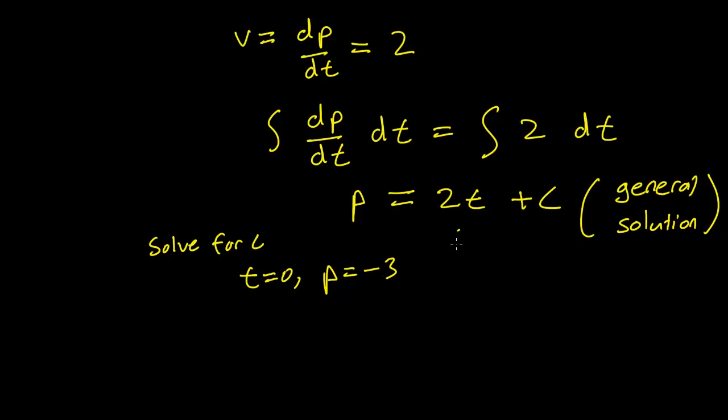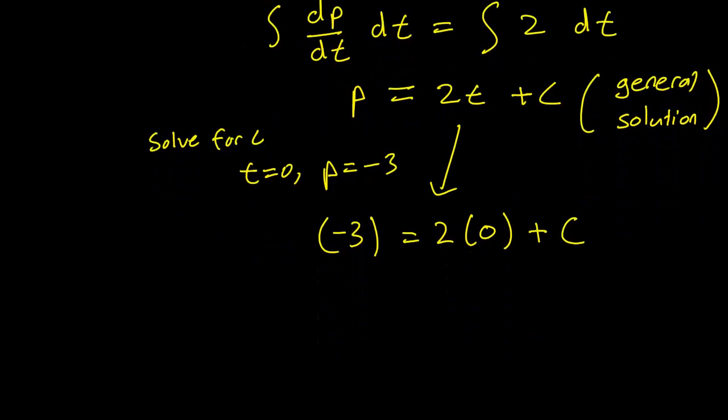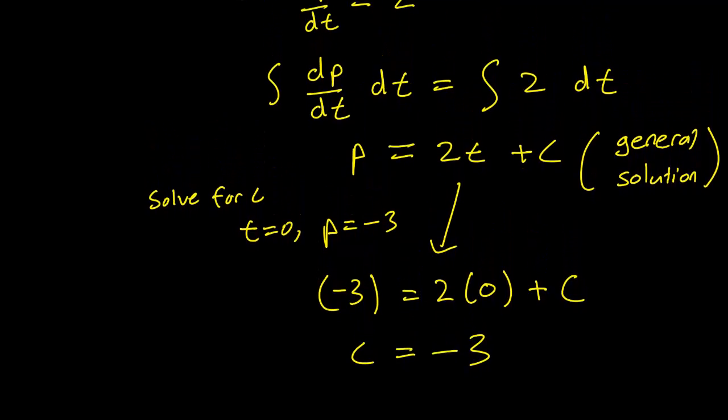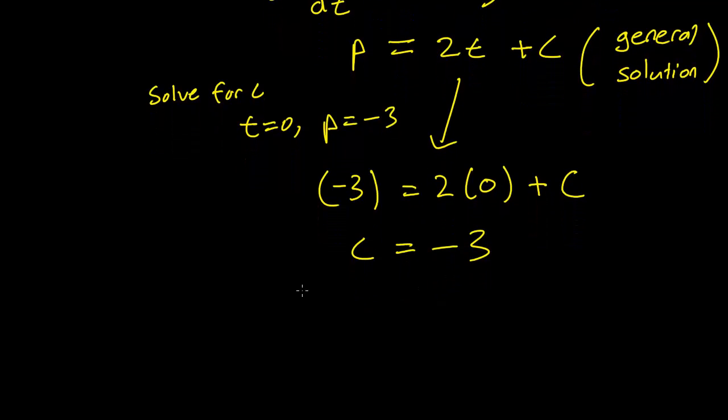We replace that in our general solution to get minus 3 equals 2 times 0 plus c. Solving for c, we get c is equal to minus 3, and we have our specific solution, p equals 2t minus 3.